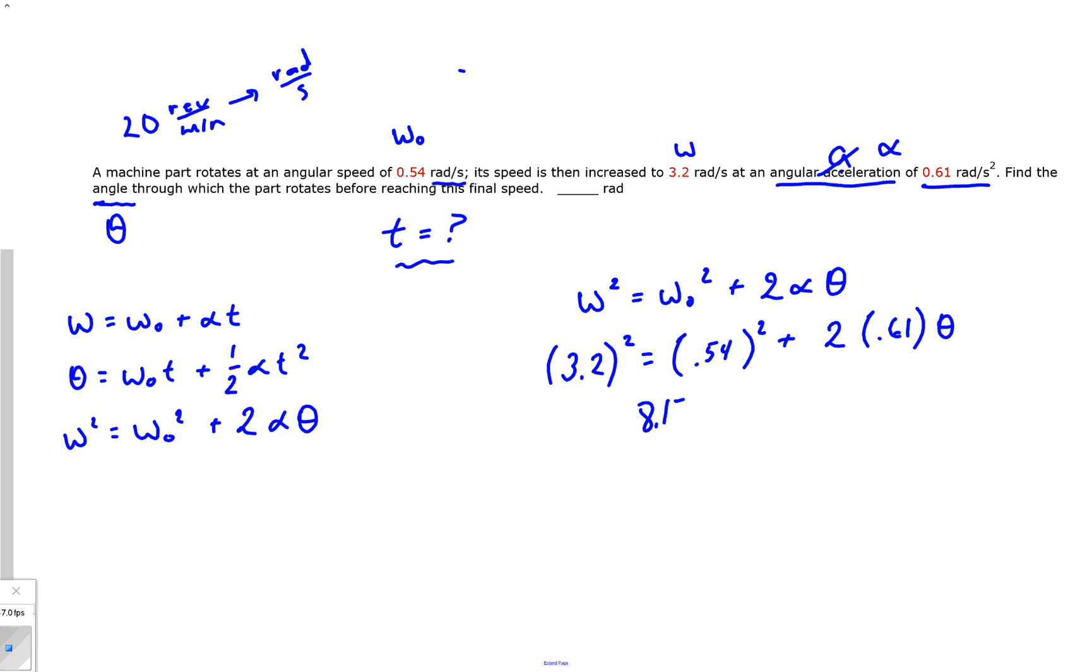Now just out of curiosity, we know that one trip around a circle is 2π radians. So just out of curiosity, could you calculate how many revolutions or rotations this was? Well yeah, that'd be an easy conversion. If you were asked to find that, all you would have to do is divide by 2π rads, and that would be your quick and easy conversion.